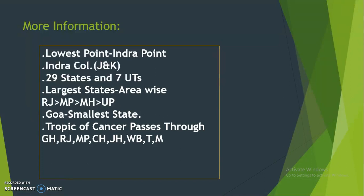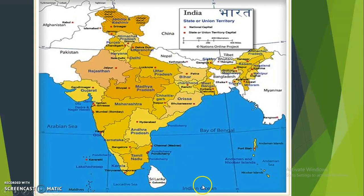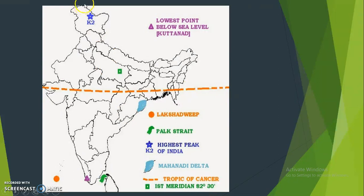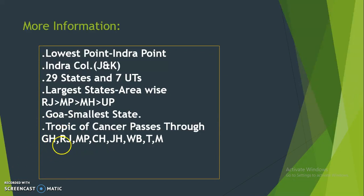The southernmost point of mainland India is Kanyakumari, but if we include the islands, the southernmost point is Indira Point. The highest point in the country is K2 (Indrakol). There are 29 states and 7 Union Territories. The largest states area-wise are Rajasthan, Madhya Pradesh, Maharashtra, and UP. Goa is the smallest state. The Tropic of Cancer passes through eight states: Gujarat, Rajasthan, Madhya Pradesh, Chhattisgarh, Jharkhand, West Bengal, Tripura, and Mizoram.